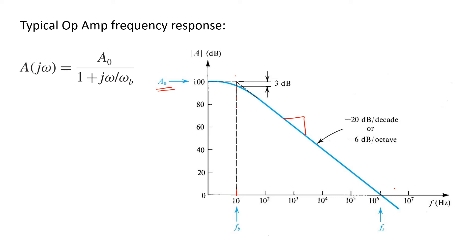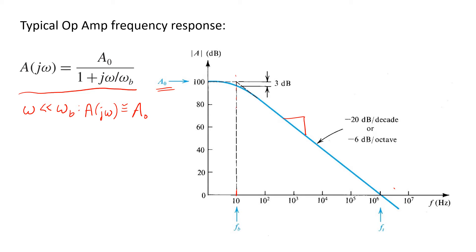That corner frequency usually arises at a very low frequency, and the frequency roll-off thereafter is typically very uniform at 20 dB per decade, for very good reasons related to stability, which you'll learn about later. We model the frequency-dependent gain of the op-amp with an expression where at frequencies ω far below the corner frequency ωB, the expression is closely approximated by A0, since the denominator is almost equal to unity. A0 is the DC gain of the op-amp, since that's the value you get when ω equals 0.